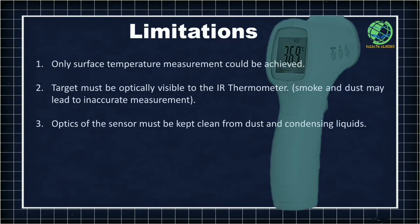As something having advantages must also have limitations, what are those limitations? Infrared thermometers can measure the temperature of surfaces only, and for measurement the target must be optically visible to the thermometer. Due to smoke or dust present between the object and the thermometer, an inaccurate measurement will result. Additionally, the optics of the infrared thermometer sensor must always be kept clean, as dust or any condensing liquid will also cause inaccurate measurement.